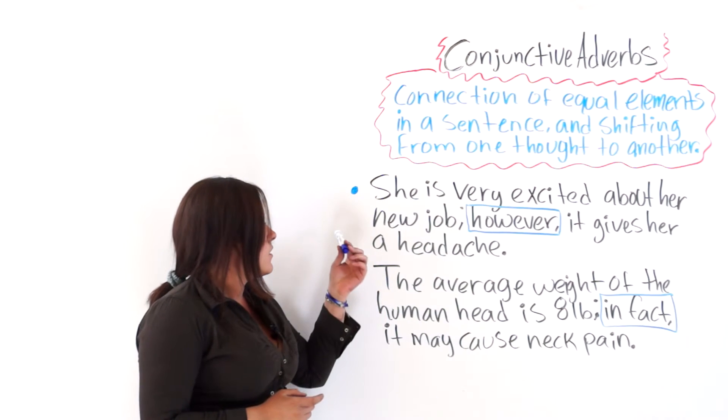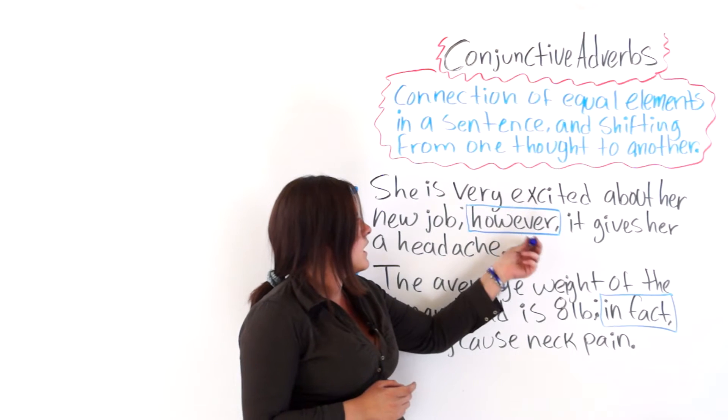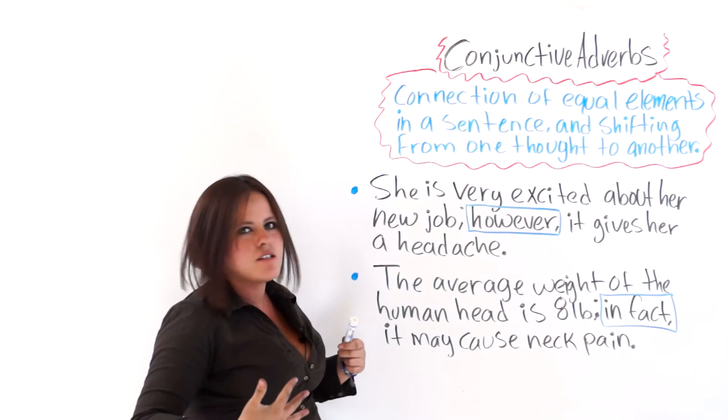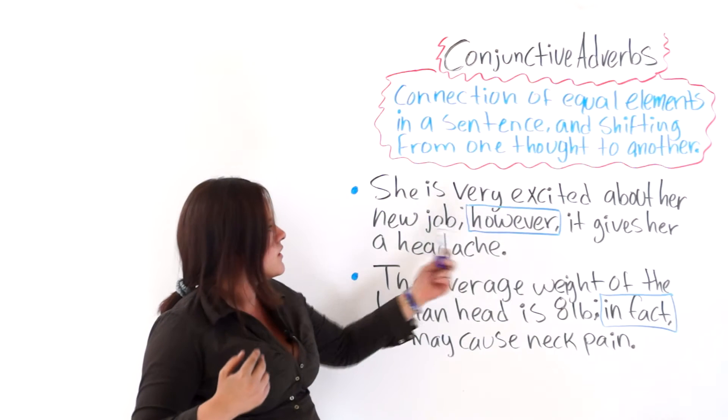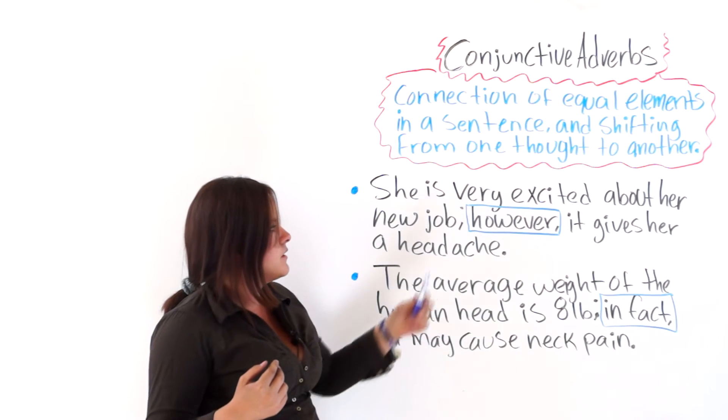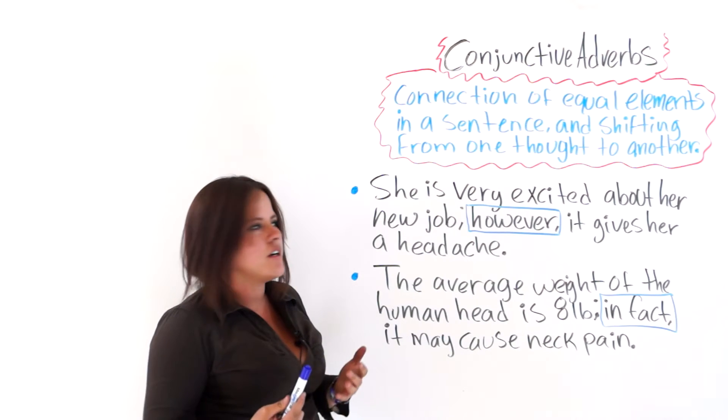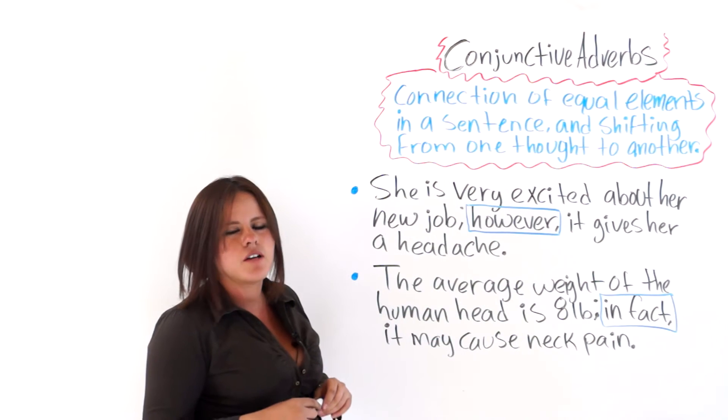Okay, so the conjunctive adverb here is however. As you can see, I'm shifting from one thought to another. She is very excited about her new job, and it gives her a headache. There are two different thoughts connected by a conjunctive adverb.